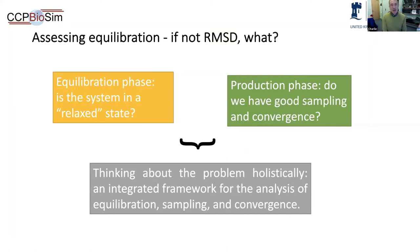So if we can't use RMSD to assess equilibration, what do we do? Let's remind ourselves why we're doing this. We have this concept of dividing our molecular dynamics simulation into two phases: the equilibration phase, where we ask whether the system is now relaxed, and the production phase, where we ask about sampling and convergence. What I'm going to argue is that trying to separate these two things out into separate questions doesn't work — you need to think about equilibration, sampling, and convergence in a holistic manner.